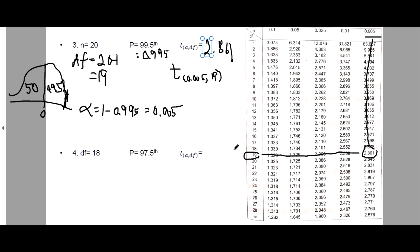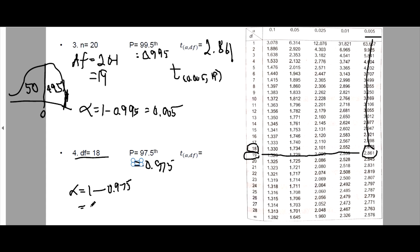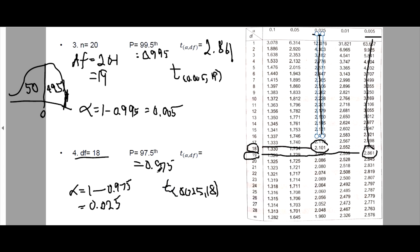Number 4: the degrees of freedom is 18 — so it's already the degrees of freedom. The percentile is 97.5, which is 0.975. Therefore alpha is 1 minus 0.975, which equals 0.025. So we have T sub 0.025 comma 18. The T value here is 2.101, and it's still positive because 97.5 is greater than the 50th percentile.